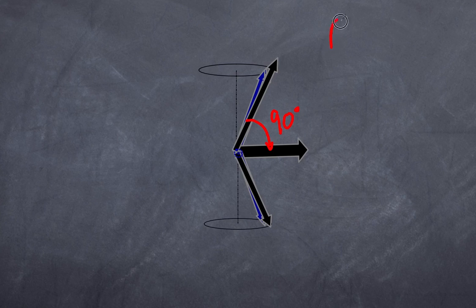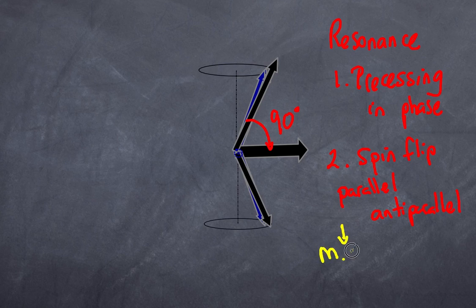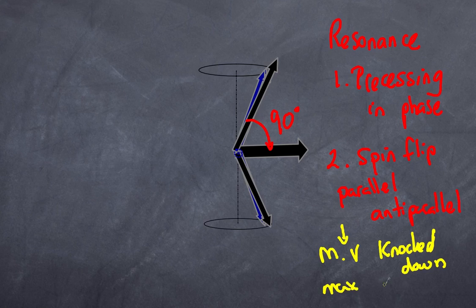The summary: when you get resonance, number one you start to get precessing in phase. Number two, you get what we call a spin flip, and that spin flip is from parallel going to anti-parallel. The net result is that your magnetization vector gets knocked down to a max of 90 degrees. That in essence is what the resonance situation is.